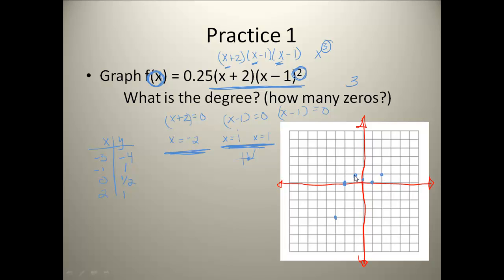Alright. And now I'm going to, before I sketch that in, I'm going to determine my end behavior. Now remember, we've got a positive a out here and an x³. So my leading coefficient and my leading degree is 0.25x³.